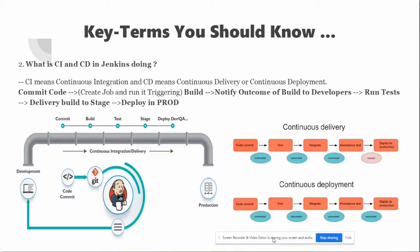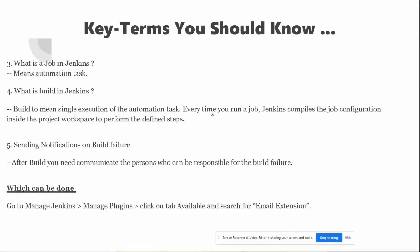Next: what is a Job and what is a Build in Jenkins? A job is nothing but an automation task — for example, automating a process where someone commits code into a Git repository and you want to build that code. A Jenkins build is a small thread that executes your automation task. Every time the job runs, Jenkins compiles the job configuration inside the project workspace to perform the defined steps, such as executing a shell script.